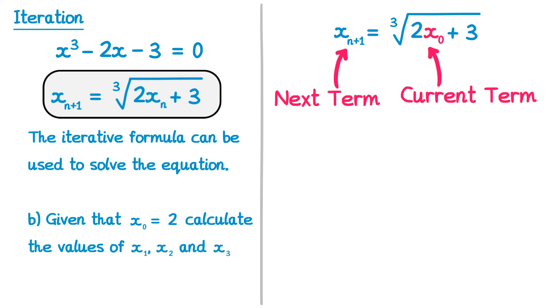If, for example, we started with our current term as x0, and we substituted in that number, and then worked it out, it would tell you what x1 is. You could then take that term and substitute it in, work it out, and you'd get x2. You could then take that term, substitute it in, work it out, and you'd get x3. And you can carry on this iterative process. x3 gives you x4, and so on.